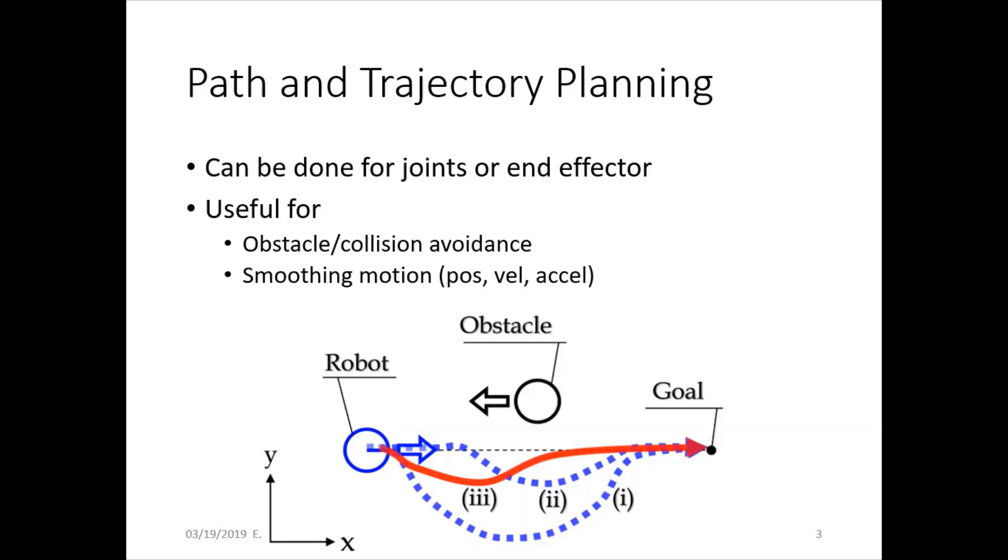You can also do this to smooth out the motion, making position, velocity, and acceleration continuous so that you don't get any jerks or spikes in the motion. Trajectory planning is a way to do that.